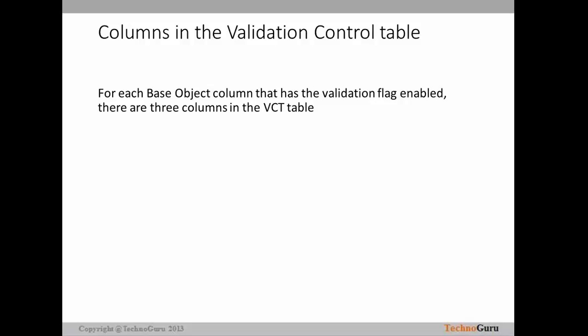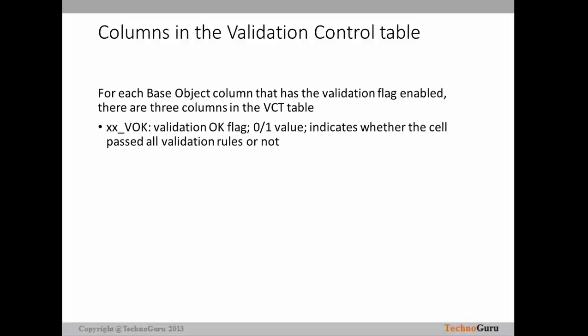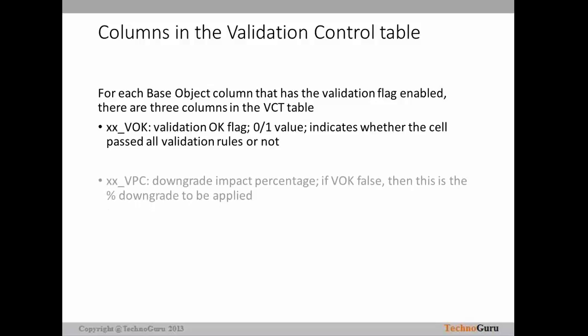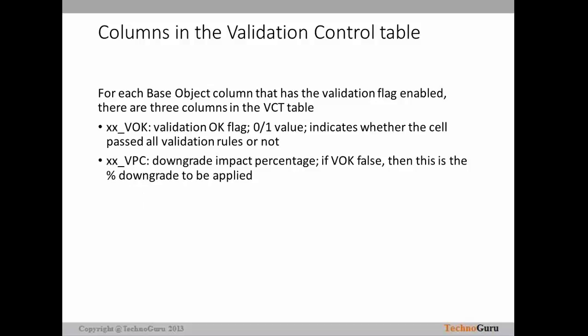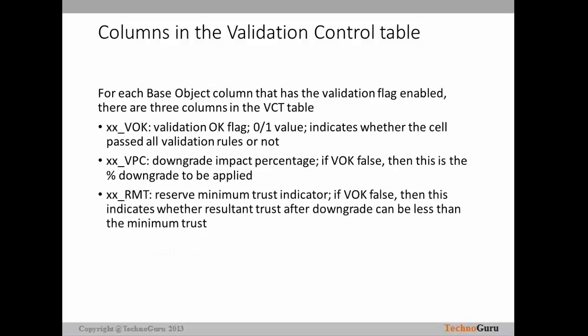For each base object column that has the validation flag enabled — and when we create a column for the base object, various properties are available, one of which is the validation flag — if you enable that flag, three columns in the validation control table will be created. The first column is VOK, the validation OK flag. Its value will be 0 or 1, indicating whether the cell passed all validation rules or not. The second column is VPC, the downgrade impact percentage. If VOK is false, this is the percentage downgrade to be applied.